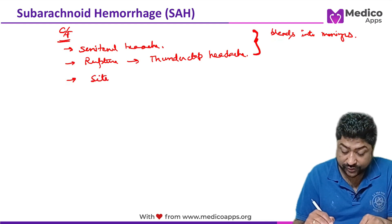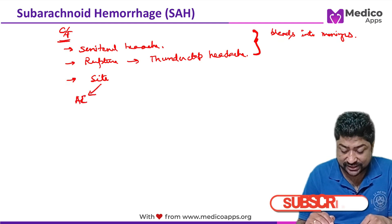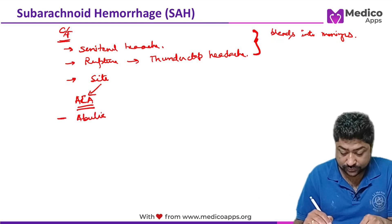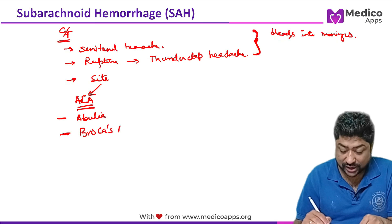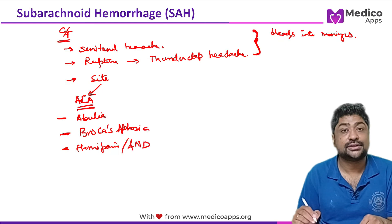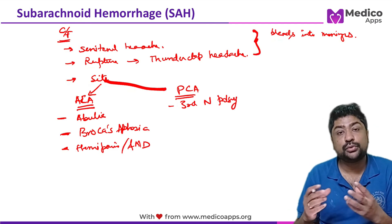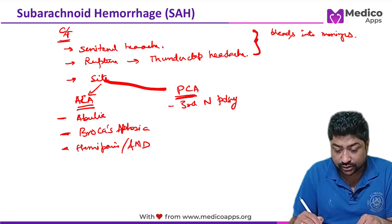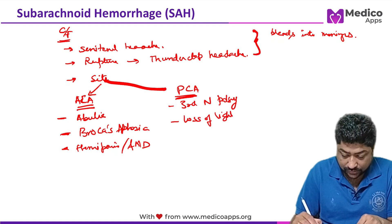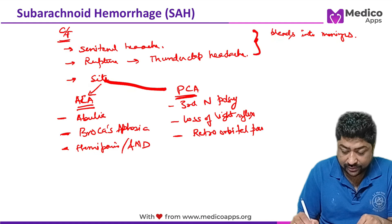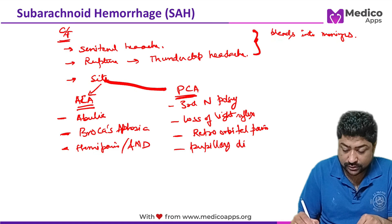Based on the site of bleed, specific symptoms arise. If the bleed is at the anterior communicating artery, you can have abulia, classic Broca's aphasia, hemiparesis, and other focal neurological deficits. If the site is the posterior communicating artery, you will see third nerve palsy, loss of light reflex, retroorbital pain, and even pupillary dilatation.